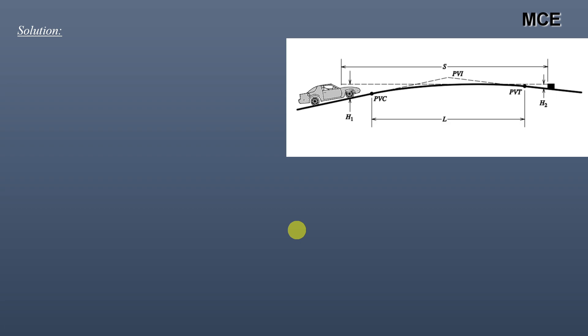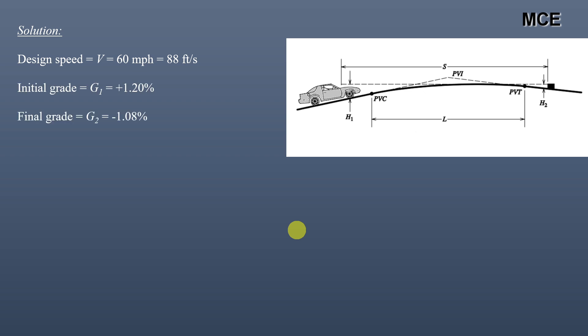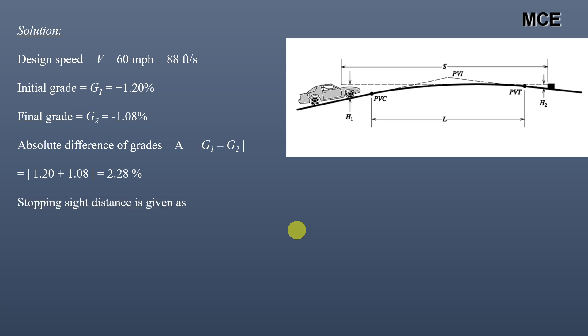First, we will calculate the stopping sight distance. The design speed is 60 miles per hour, which equals 88 feet per second. The initial grade G1 is plus 1.2% and the final grade G2 is minus 1.08%. The absolute difference of grade is G1 minus G2, which equals 1.2 plus 1.08 = 2.28%.